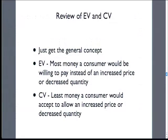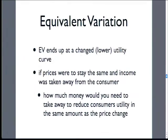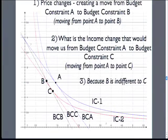This goes back to a short review of equivalent variation and compensating variation from last time. The way I want to motivate it is that where we're moving next is into surveys, and it's related to how we ask survey questions. Equivalent variation is the money that a consumer would be willing to pay instead of experiencing an increased price or decreased quantity. Compensating variation is the least money that a consumer would accept in order to allow a change in price or quantity. For EV, you end up at a lower utility curve — how much income would you take away to get the consumer to that lower utility curve that they would reach with a price change? You start at point A, prices change and you go to point B, and point C is with the same price ratio as point A but at a lower income level.